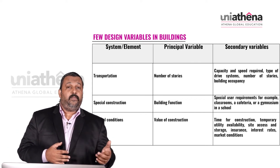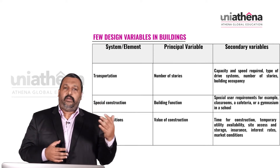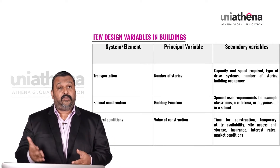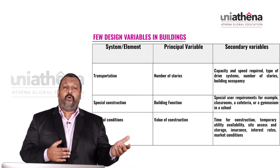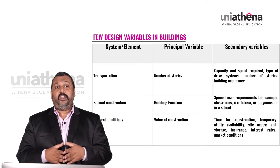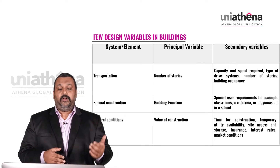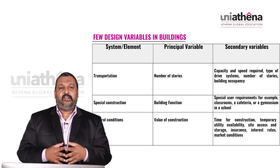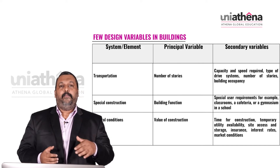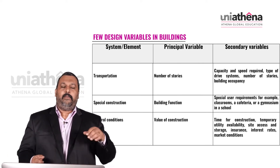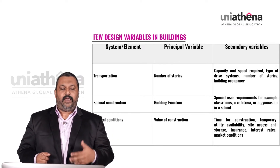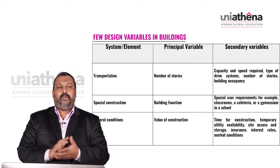Transportation can be vertical — such as elevators, lifts, or escalators — or horizontal. The principal variable for transportation is the number of stories of the building. Secondary variables are the capacity and speed required, type of drive system, number of stories, and building occupancy.